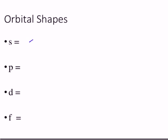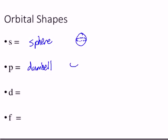S orbital shape is a sphere — not a circle. It's three-dimensional, so if you draw a circle on a test it's wrong. It gets bigger as the energy level increases: 1s is small, 2s is larger, 3s even bigger. The P orbital shape is a dumbbell. There are three P orbitals — one along the X-axis, one along the Y-axis, and one along the Z-axis, which points right out at you.